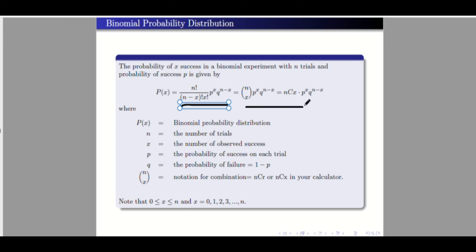We have this formula in expanded form. This part uses combination — because we will compute all possible combinations. In your calculator, this is written as nCx; other calculators may have a similar symbol. Note that n is the number of trials — this is the fixed number of trials.